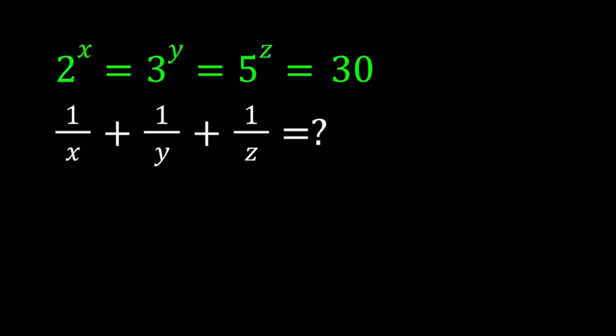First I thought I made this video a while ago but I couldn't find it, so hopefully I didn't make it before. Let me know if you find this video in my videos. Anyways, we have 2 to the power x equals 3 to the power y equals 5 to the power z equals 30, and then we are being asked 1 over x plus 1 over y plus 1 over z.